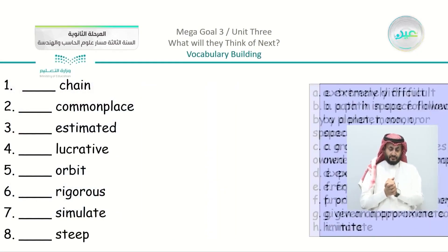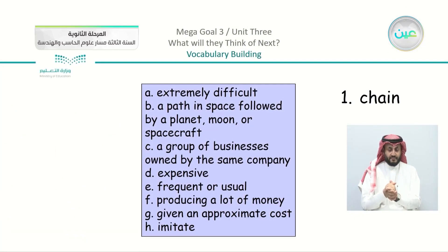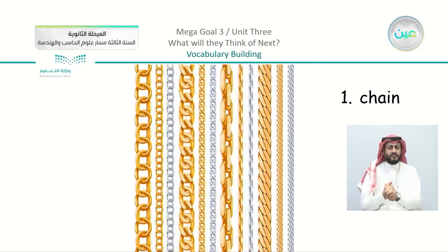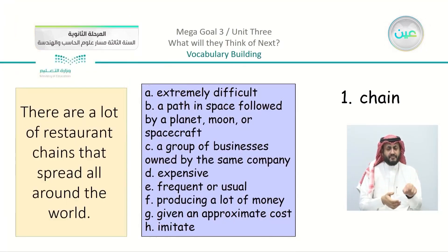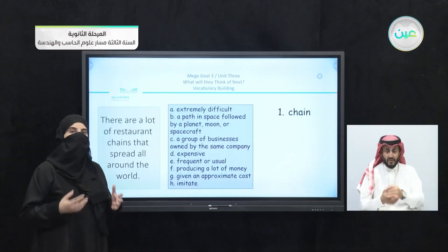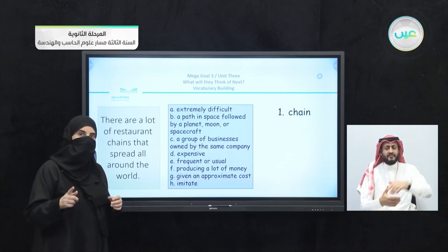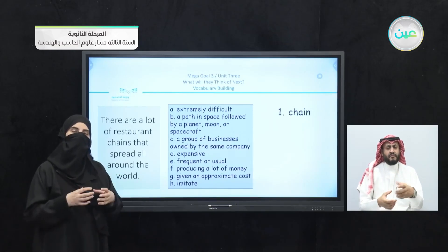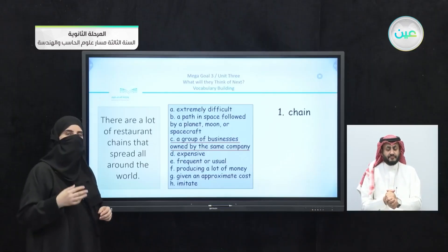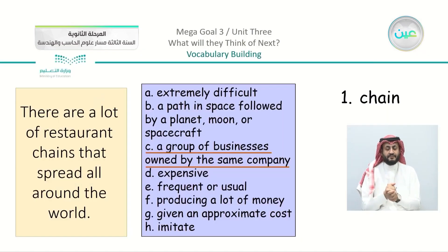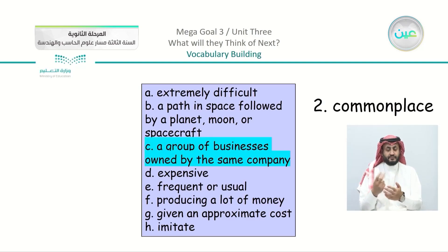Now we are going to focus on the words. Starting with the first word: 'chain.' I can show you a picture of chains. For example, there are a lot of restaurant chains that spread all around the world. Popular restaurants and cafes have chains — not just one restaurant, but several restaurants in the same chain. So 'chain' means a group of businesses owned by the same company. If one store is a business, many stores together form a group of businesses.